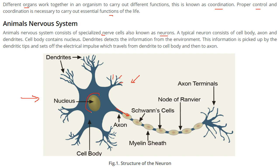The cell body has a nucleus. These dendrites are responsible for detecting information from the outside environment. This information is picked up by the dendritic tips, and they set off an electrical pulse that travels from the dendrite to the cell body and then to the axon. This is the structure of the neuron.